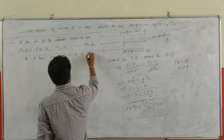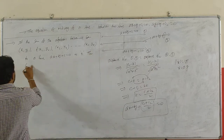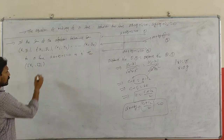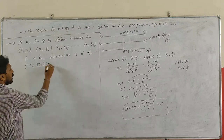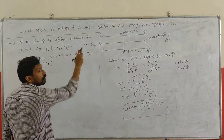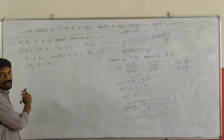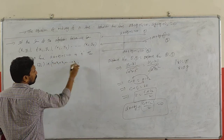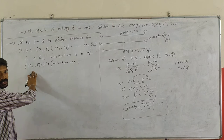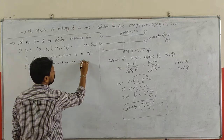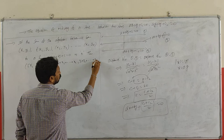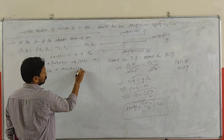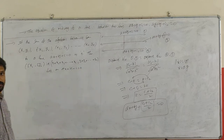The conclusion is that the point (Σxi/n, Σyi/n) — that is, the centroid — lies on the line Ax+By+C=0. Here Σxi = x1+x2+x3+...+xn and Σyi = y1+y2+...+yn.